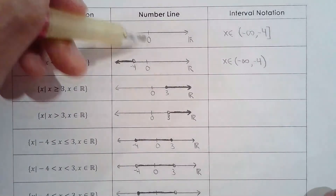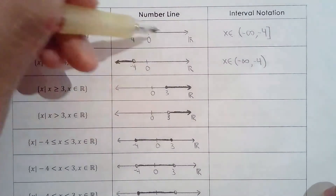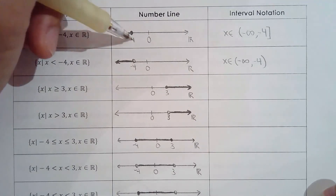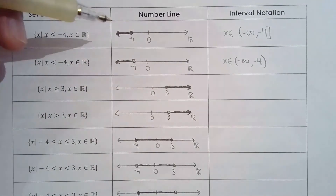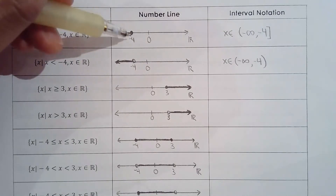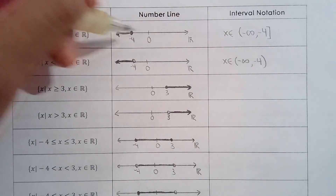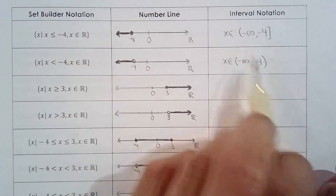I do want to mention that for number lines there are some other notations people use — for example, some people put square brackets on the number line instead of filled-in circles. Don't be surprised if you see square and round brackets on number lines; they mean basically the same thing.